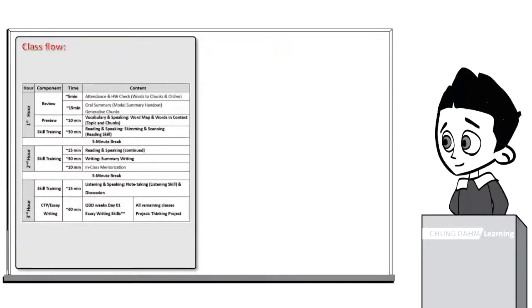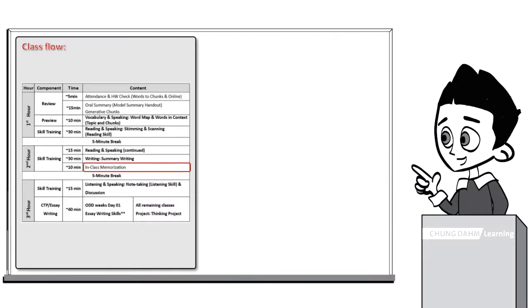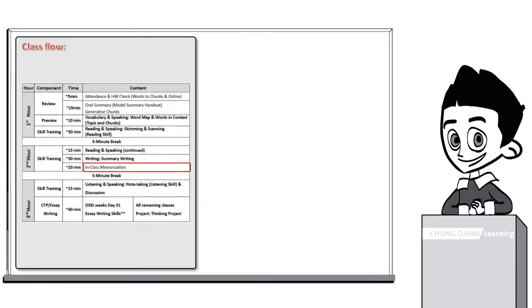In-class memorization is a component from the skill training portion and takes place immediately after summary writing. During this part, students memorize key details from the story and recite them, which helps in developing their speaking and expression ability. Also, these key details are what the students recite during the oral summary component the following day.